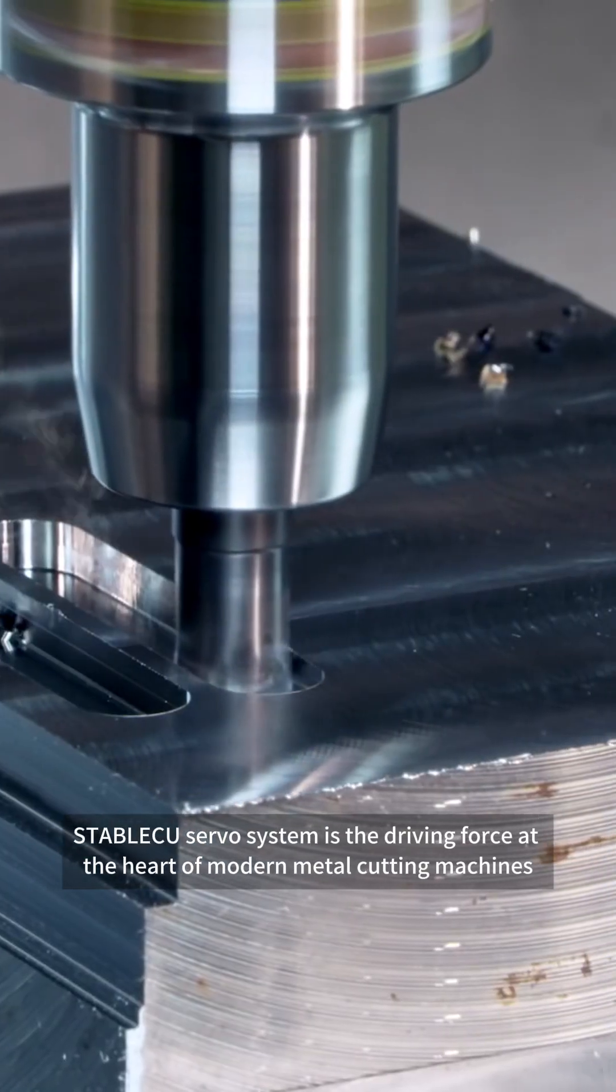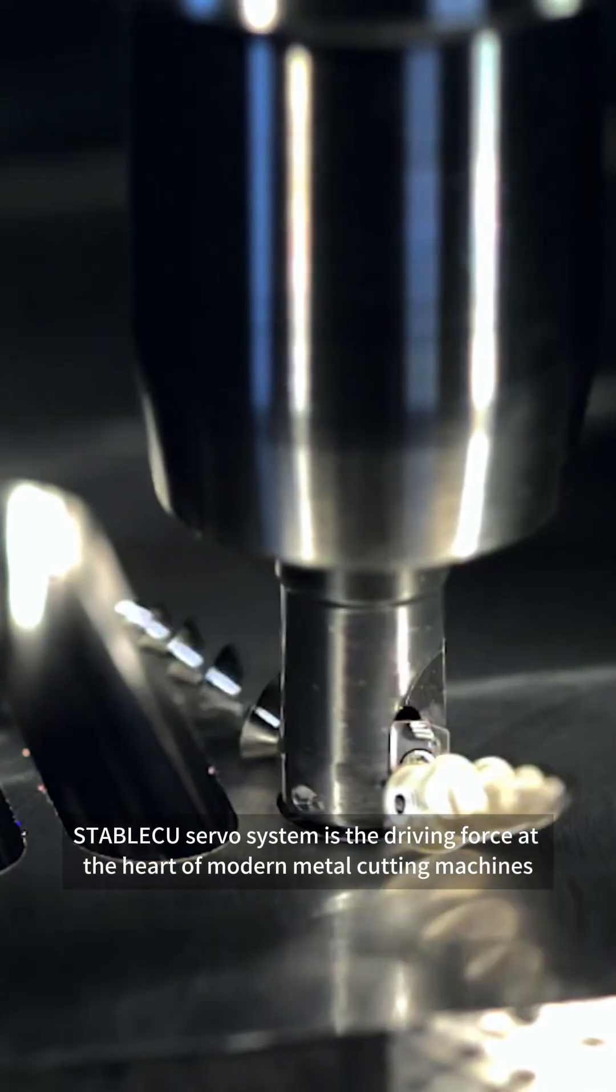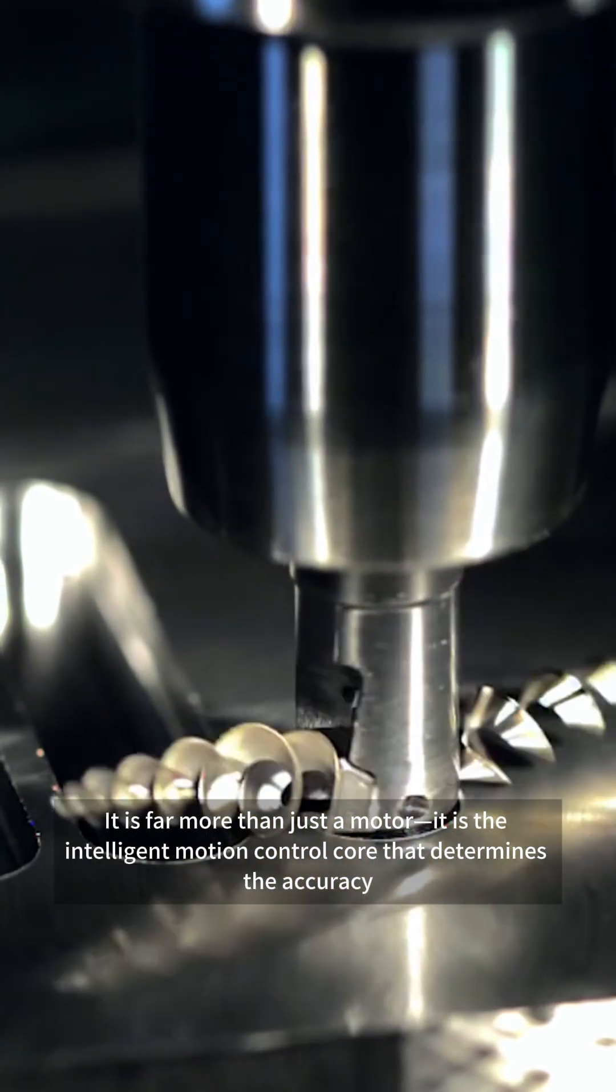Stable CU servo system is the driving force at the heart of modern metal cutting machines. It is far more than just a motor.